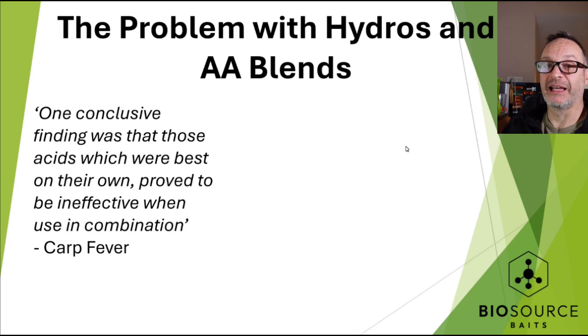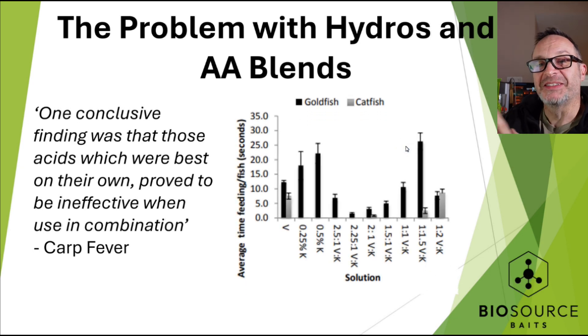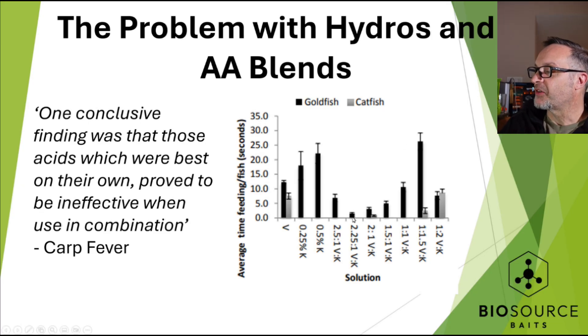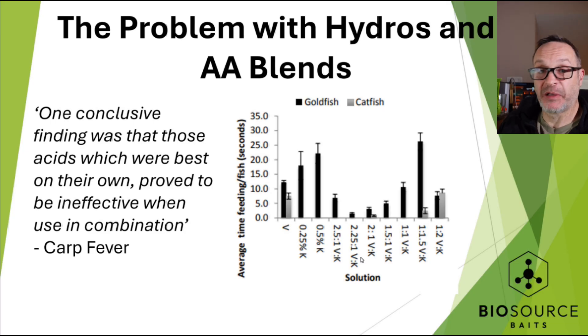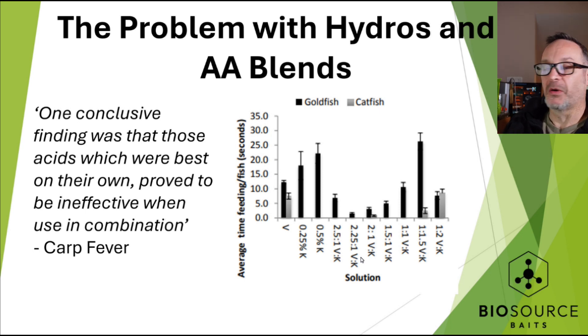My first research project as a professor was to verify that cancellation. The graph tells you everything: V is valine and K is lysine, and at a 2.25-to-1 valine-to-lysine ratio the stimulatory effect cancels exactly. Kevin observed this empirically by watching fish behavior; we confirmed it with recorded, repeatable experiments. We call this an Allosteric study, and it confirms: when you mix the two most potent amino acids together they cancel. Hope you enjoyed it — see you at the show, or drop me a line in the comments or at info@biosourcebase.com.